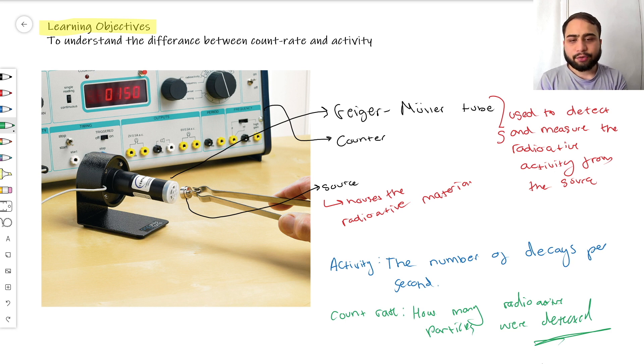Activity is measured in becquerels. If your activity is 15 becquerels, that means 15 nuclei decay every second. Your count rate in a perfect world should also be 15 becquerels for that one second.